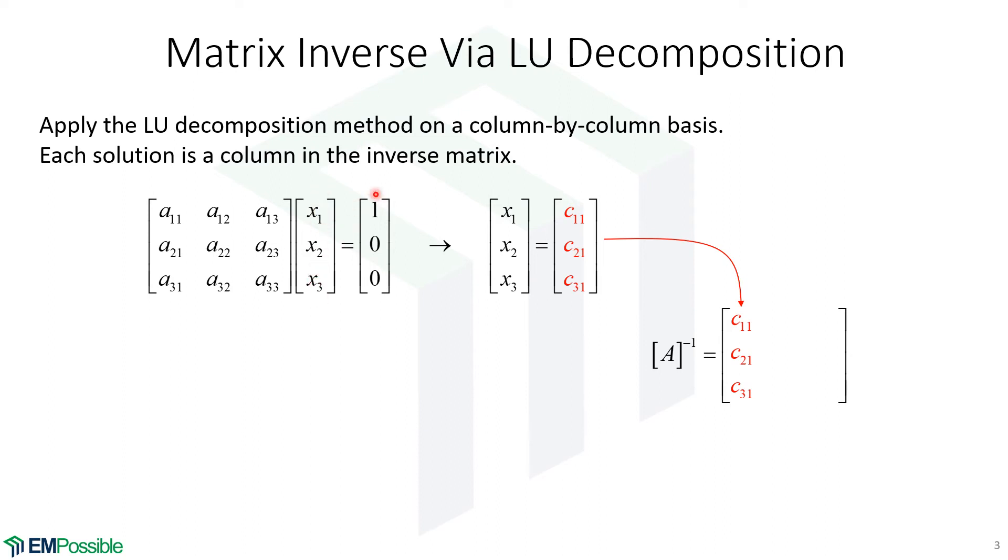What we'll do is, one at a time, we have this column vector on the right. We will put a one in the first position and zeros in the remaining. We'll apply LU decomposition to solve for this column vector of Xs, and we get an answer. That is the first column in the inverse matrix.